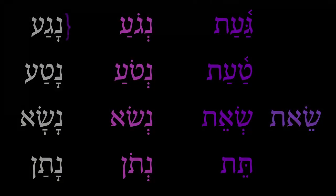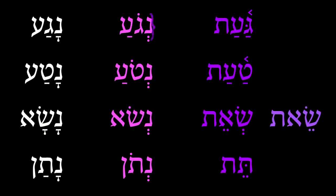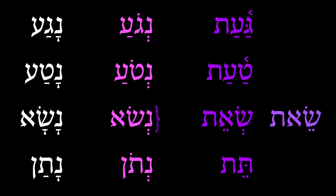Look at a few more examples: naga becomes nigoa or gaath, nata becomes nisoa or taath, nasa becomes niso or saith. Look at nathan — it becomes nathan or taith. Notice in these alternate forms the accent moves to the front, so it's on the first syllable.